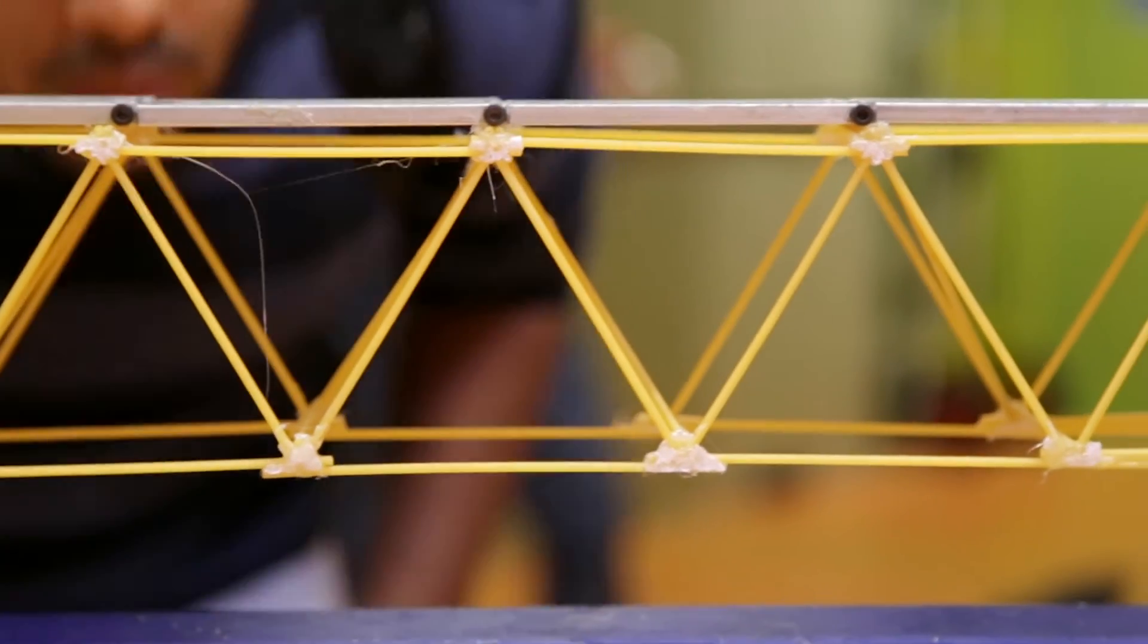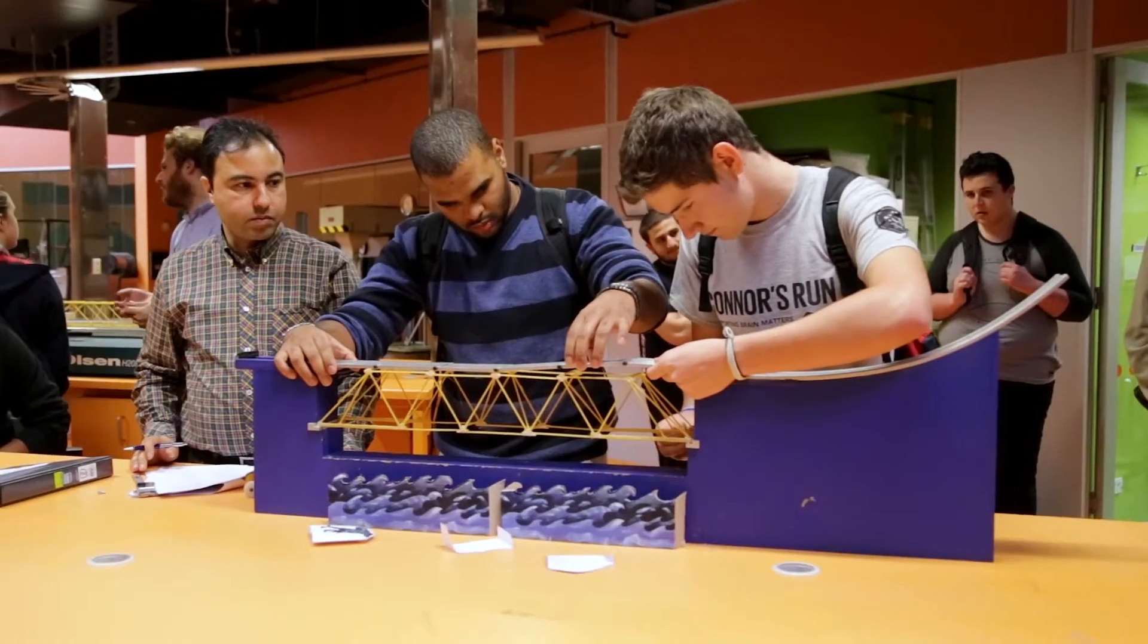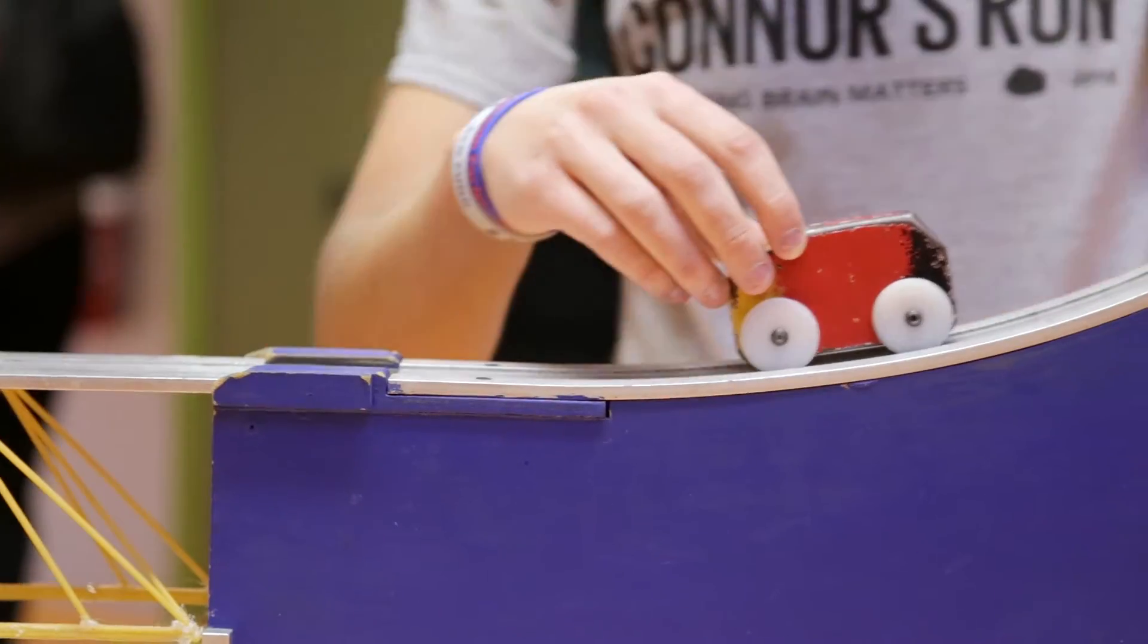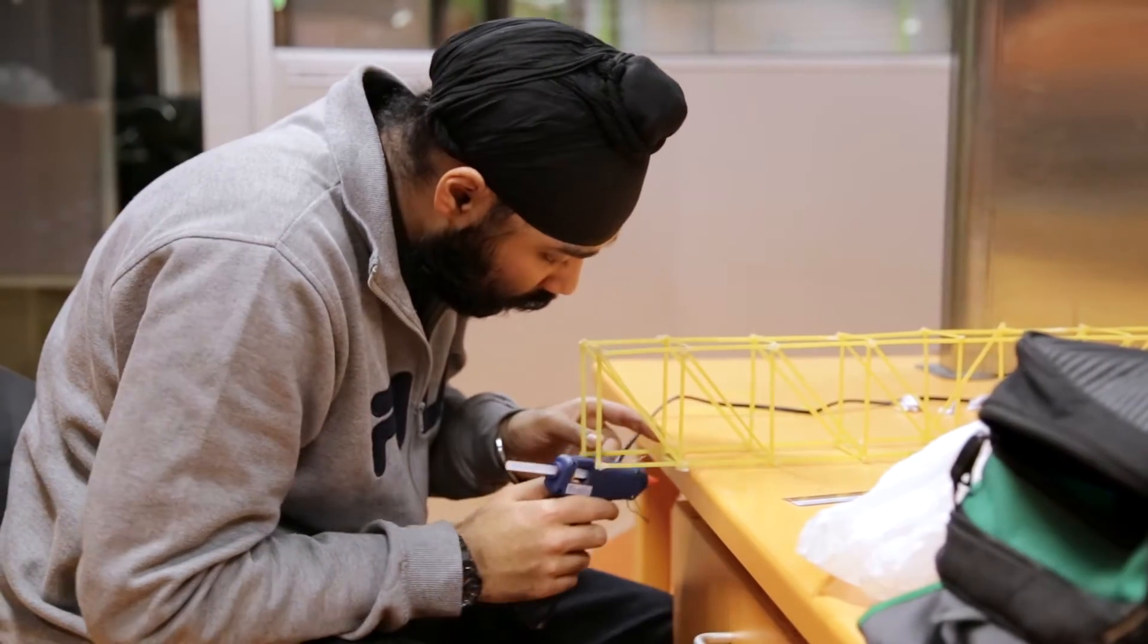Essentially, the project was to build a bridge that could withstand both a static distributed load as well as a dynamic load of a moving car. We're using spaghetti, which is not that strong, and it's quite a challenge.